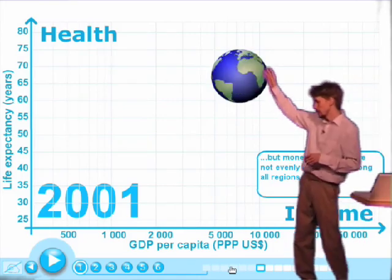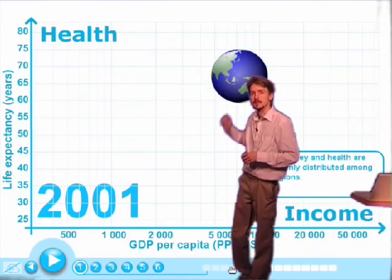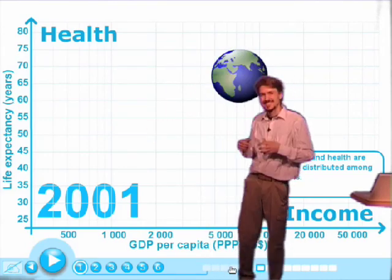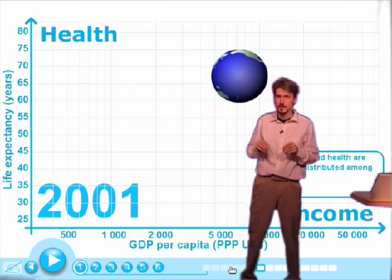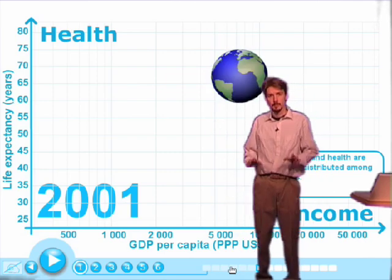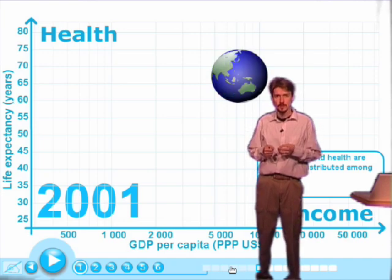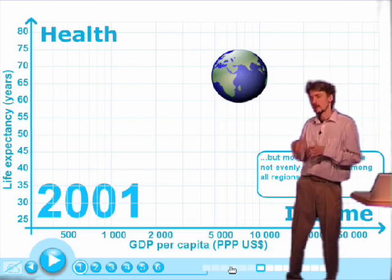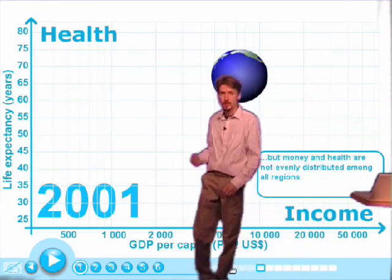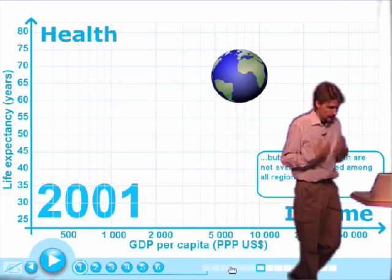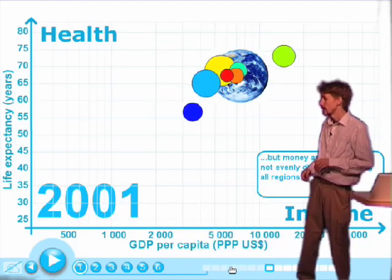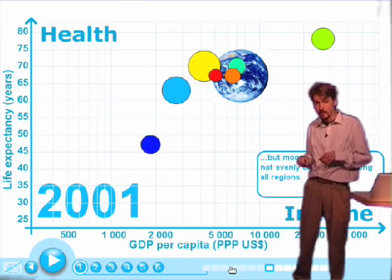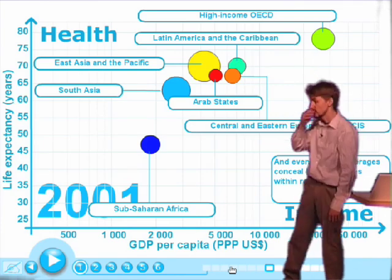In 2001, life expectancy in the world on average was 67 to 68 years of age, and we had a little bit over $7,000 per capita. But this is an average, and we know that there are big differences between rich and poor countries, so we have to split up the world into its regions. We start by showing the differences between Sub-Saharan Africa down there in the graph and the rich OECD countries up here.